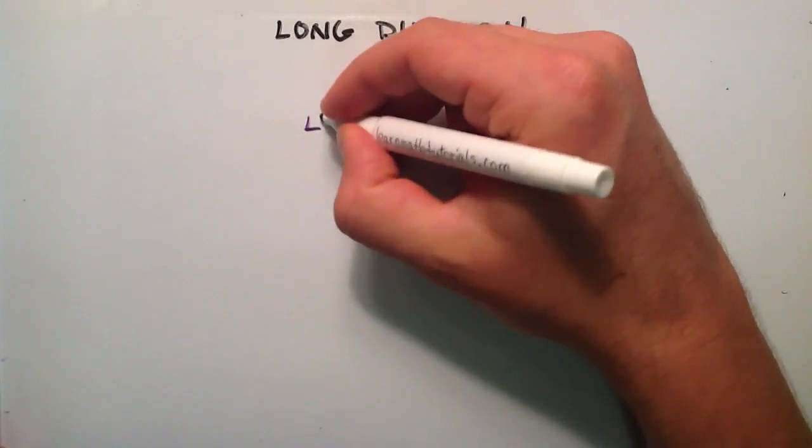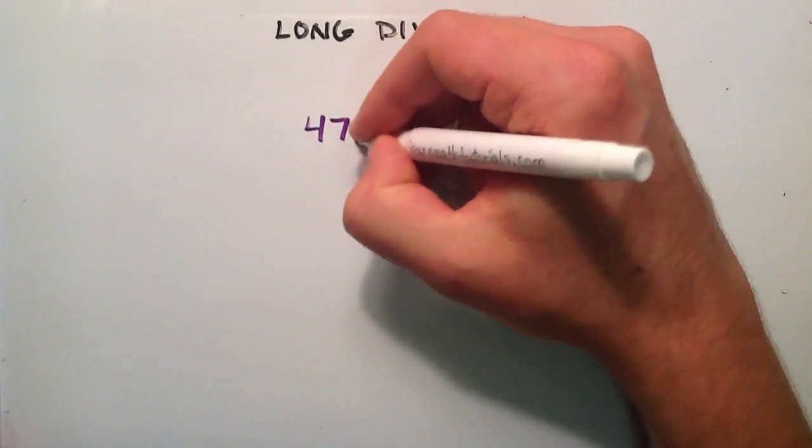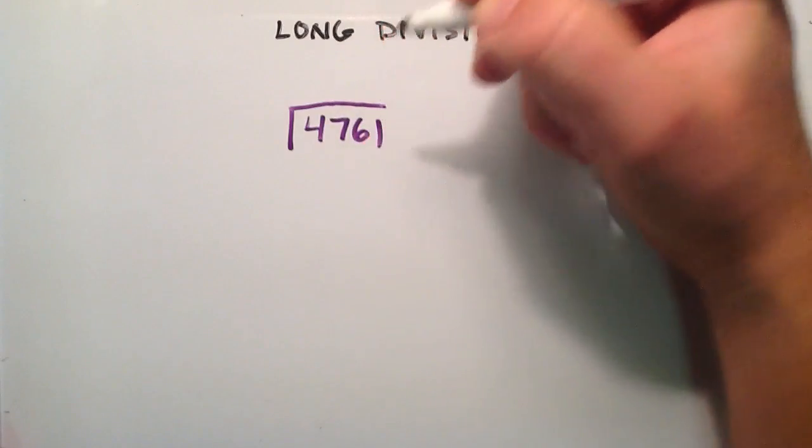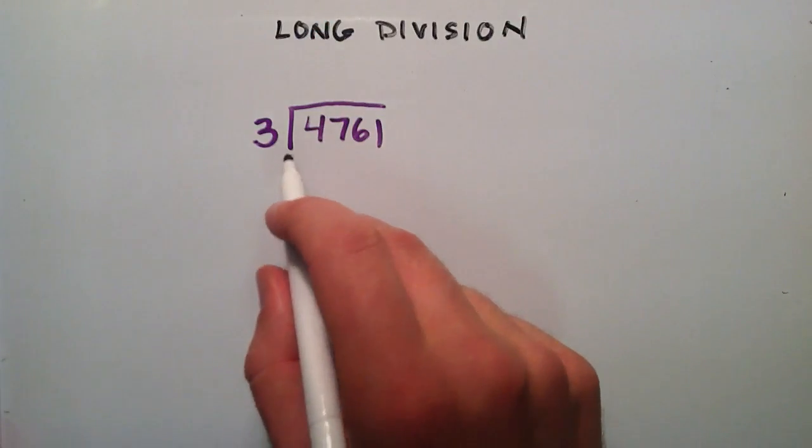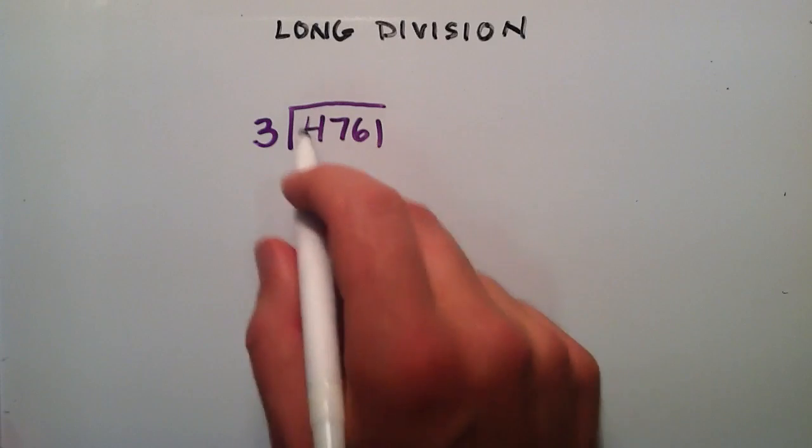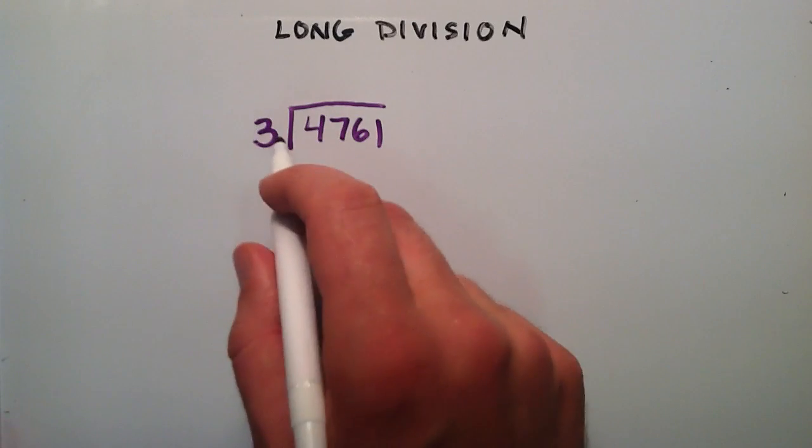So what we're going to do is take the number 4761 and divide that by the number 3. Just so that you know, the number under here is called the dividend and the number out here is called the divisor.